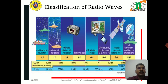The classification of radio waves is also given in a pictorial representation, where the different frequency ranges are used for different applications. For example, very low frequency is used for maritime radio navigation, whereas the ultra-high frequency range is used for television and mobile phones.